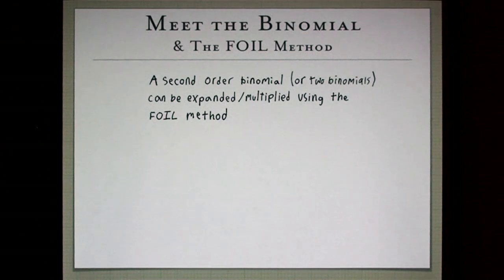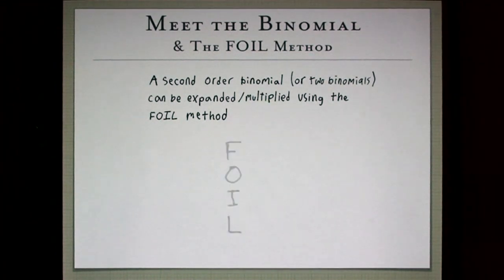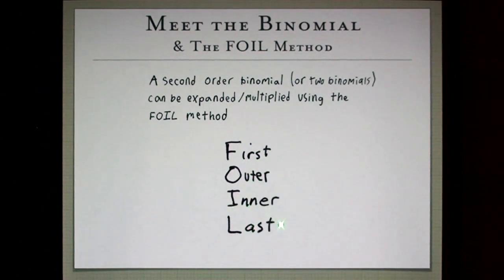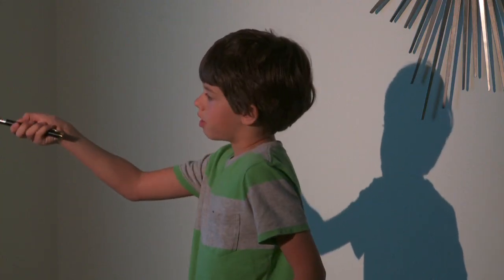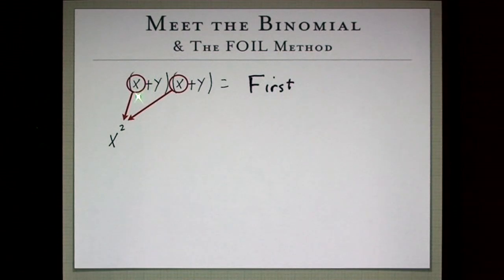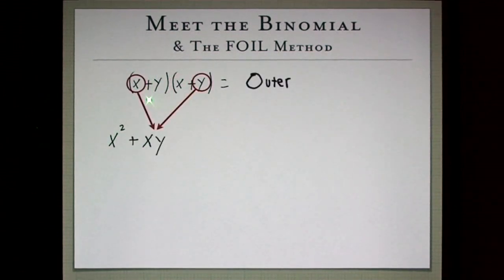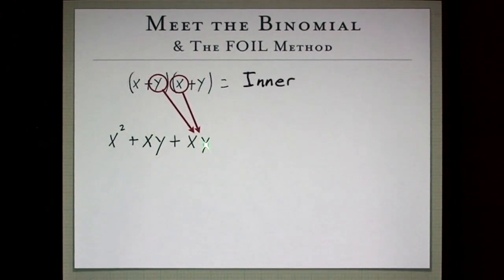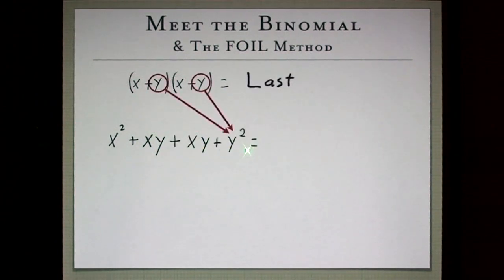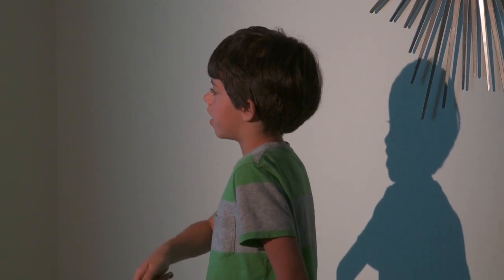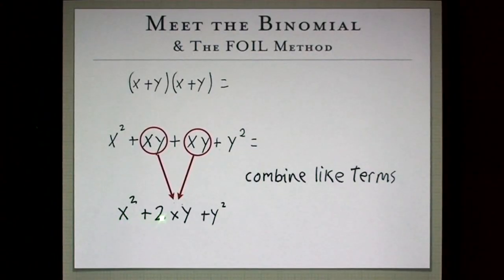A second-order binomial, or two binomials, can be expanded using the FOIL method — First, Outer, Inner, Last. You multiply the first terms to get x squared, then the outer and inner terms give xy plus xy, and the last terms give y squared. Combining like terms gives x squared plus 2xy plus y squared.